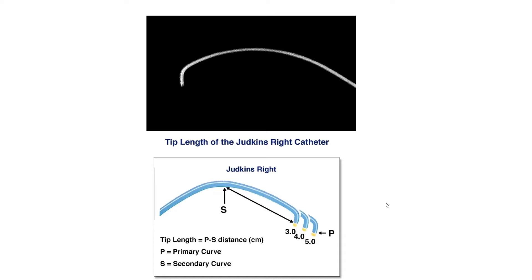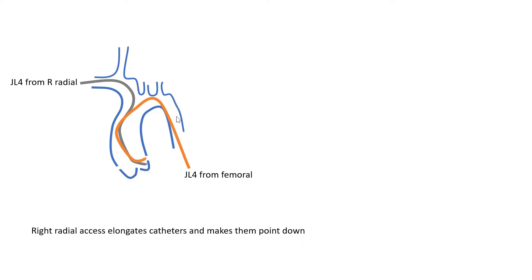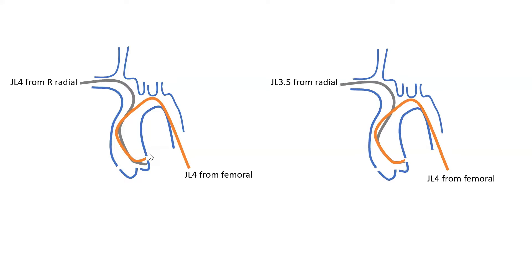For a patient where you need to engage the left coronary from the femoral axis using a JL4, what size catheter do you need from a right radial axis? From right radial, as the catheter comes through the innominate into the ascending aorta, because of that sharp bend, the catheter gets elongated and points down. Therefore, if you use a JL4 from right radial in that same patient, the catheter will be pointing down and will not engage. Because of that elongation, you need a shorter catheter — so a JL3.5 from right radial will engage the coronary.